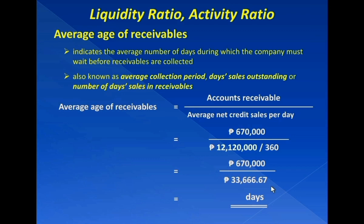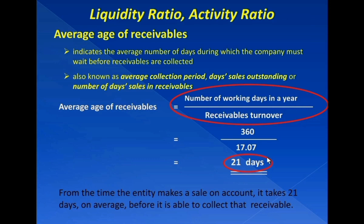We use 360 days as the standard number of days in a year, not 365 days. $670,000 divided by $33,666.67 equals 20 days average age of receivables — which is one day less than our answer of 21 days using the first formula. As mentioned, there could be a small difference in the answer when using another formula, but that is not a problem. Either answer is acceptable; the difference may be considered negligible and insignificant.